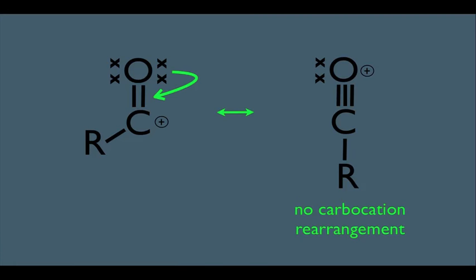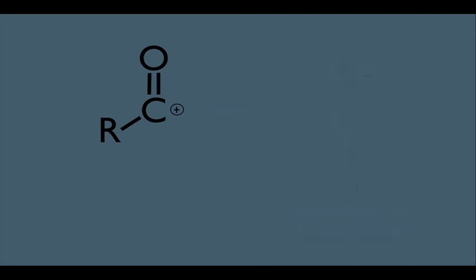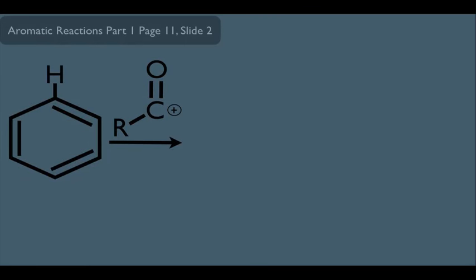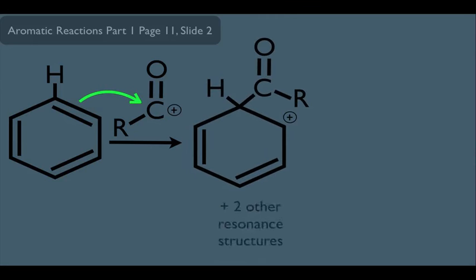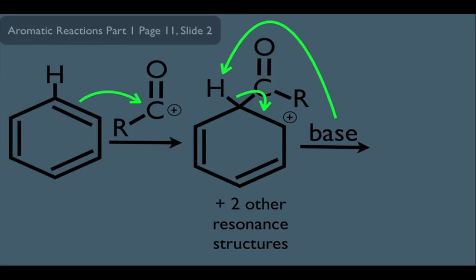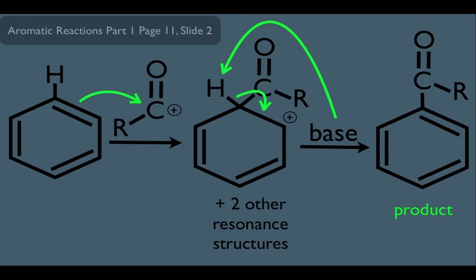Back to the mechanism: the resonance structure with the positive charge on carbon is the one that reacts. The electrons in the benzene ring attack this positively charged carbon, forming an intermediate arenium ion with the two other resonance structures. Then a base removes the hydrogen, electrons fall back to restore aromaticity, and we get our aromatic product.